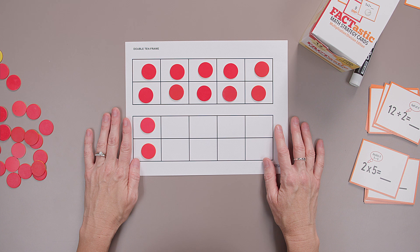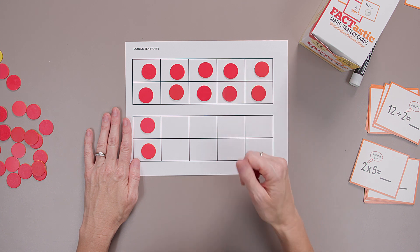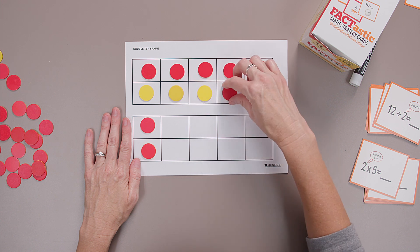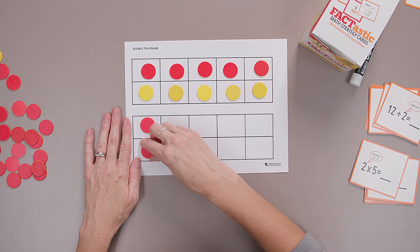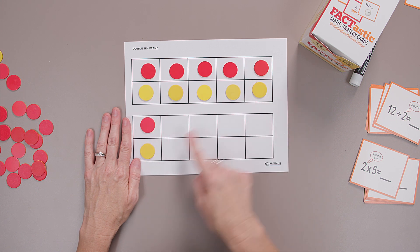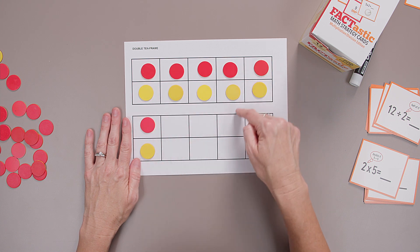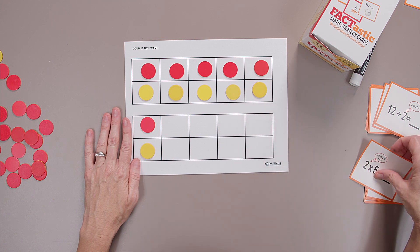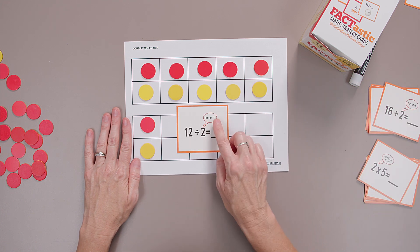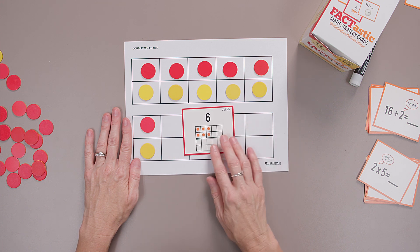Twelve divided by two means I need half. I'm going to take away half, or I'm going to move half to the yellow side. Half of twelve. Now I have six red and six yellow. Six and six is twelve. I can think about twelve divided by two, finding half is six.